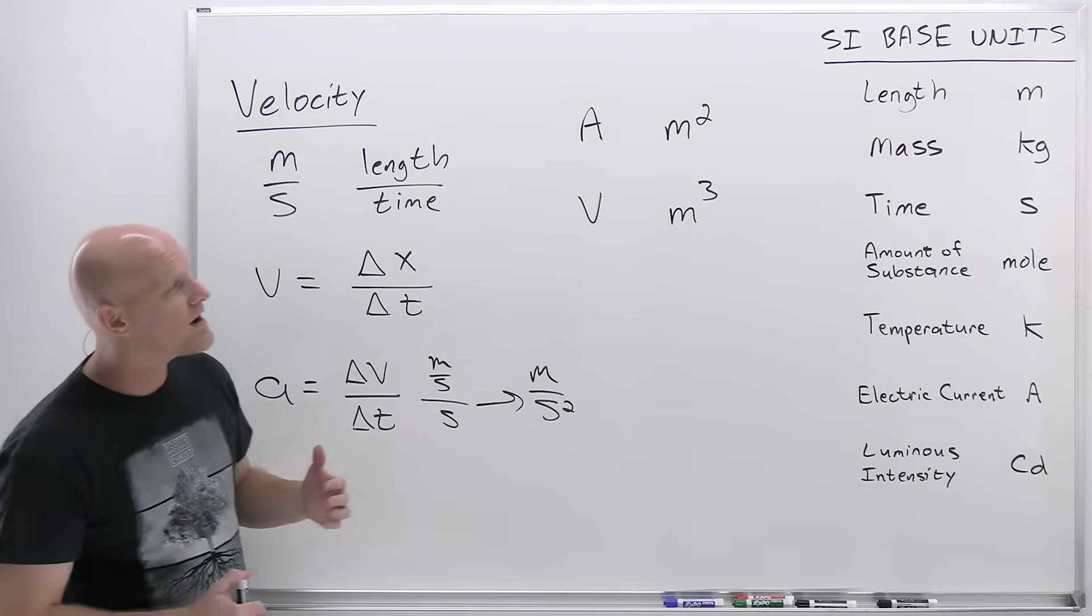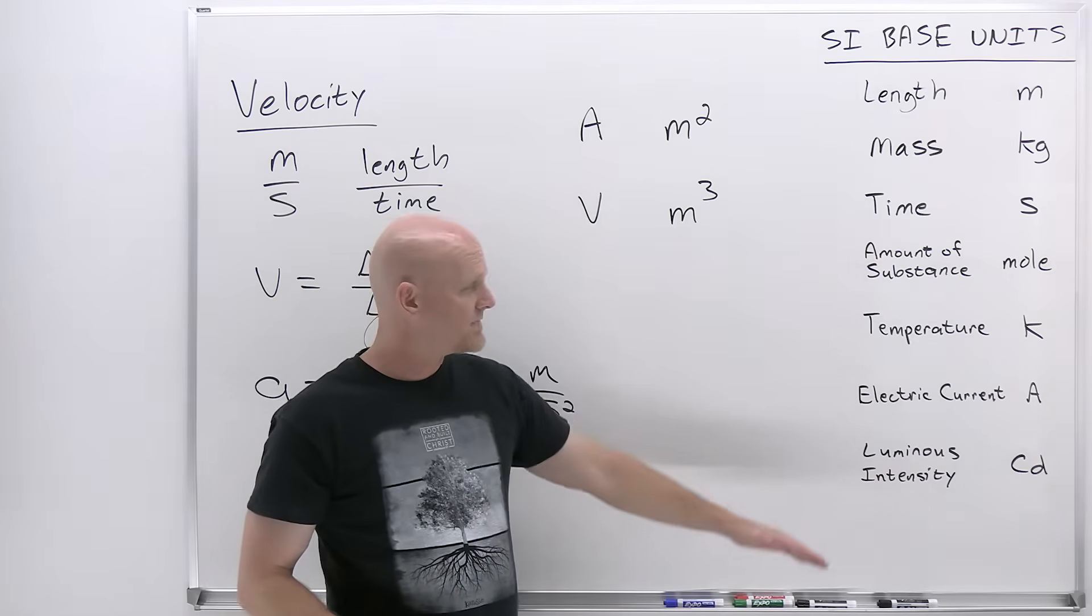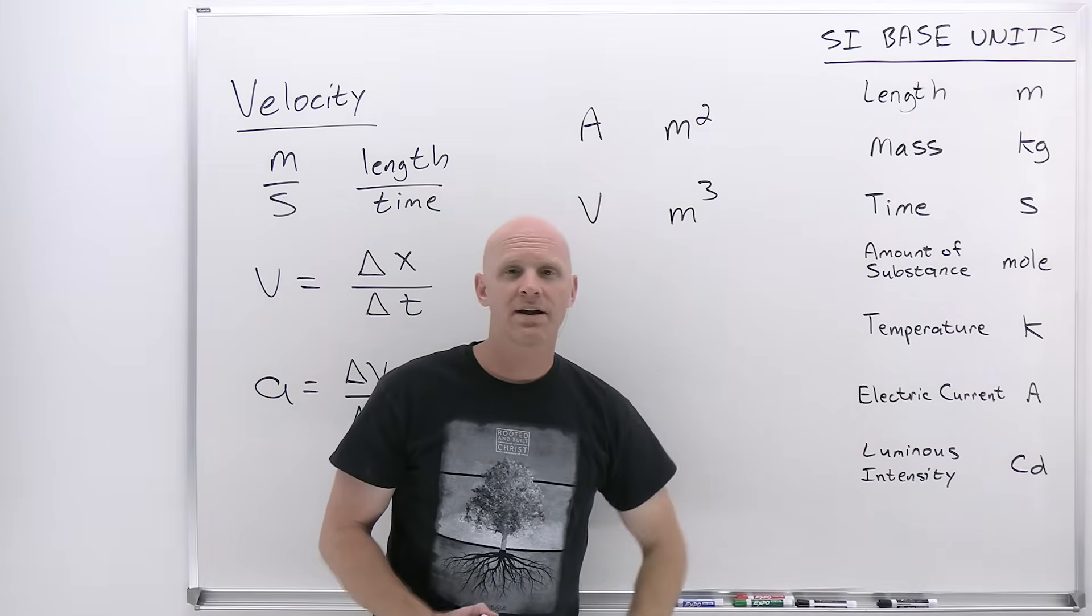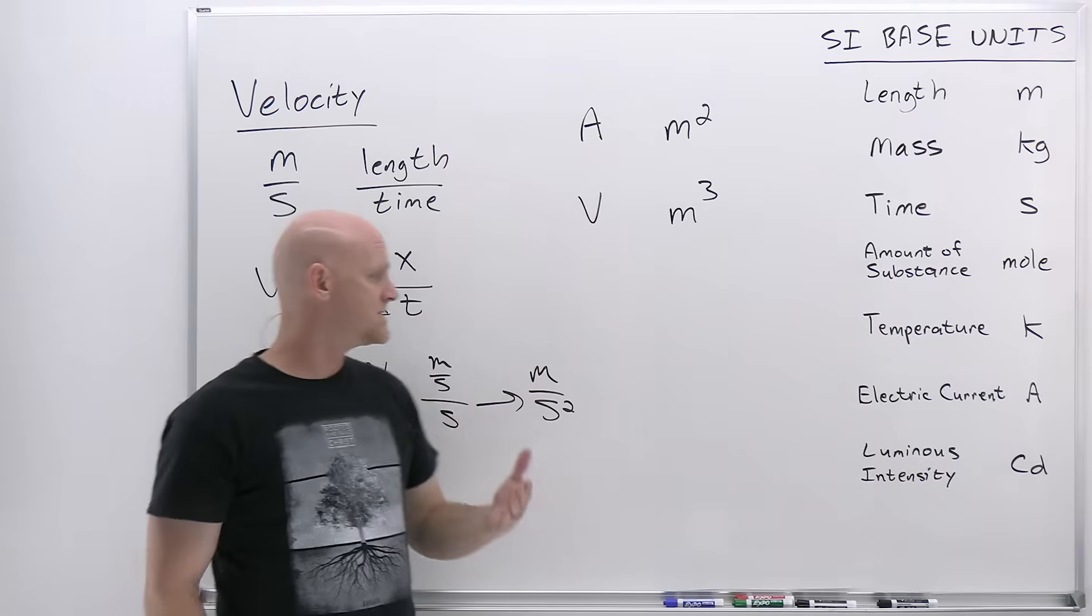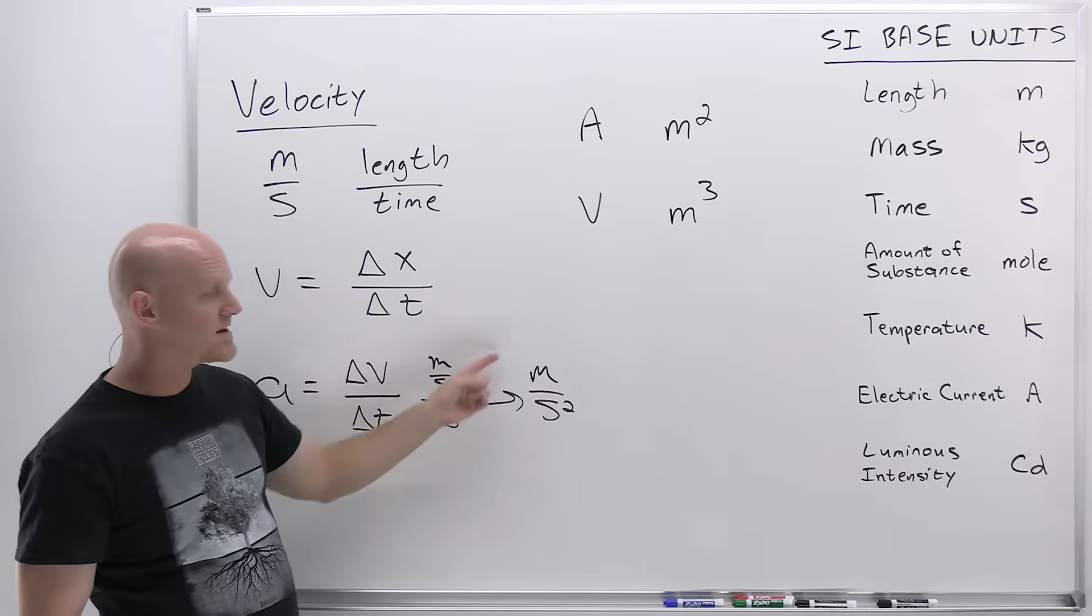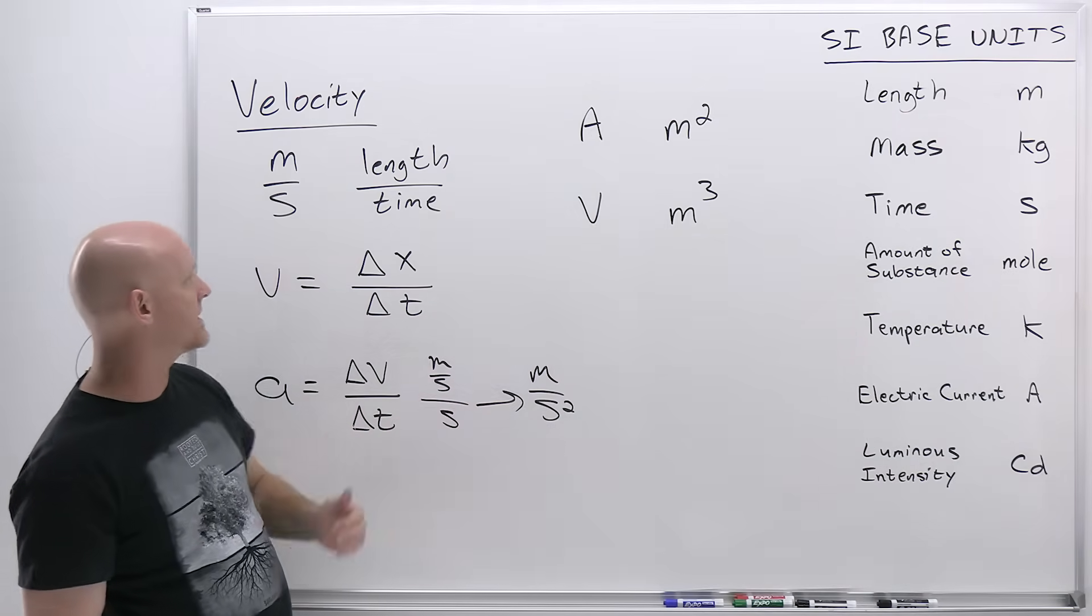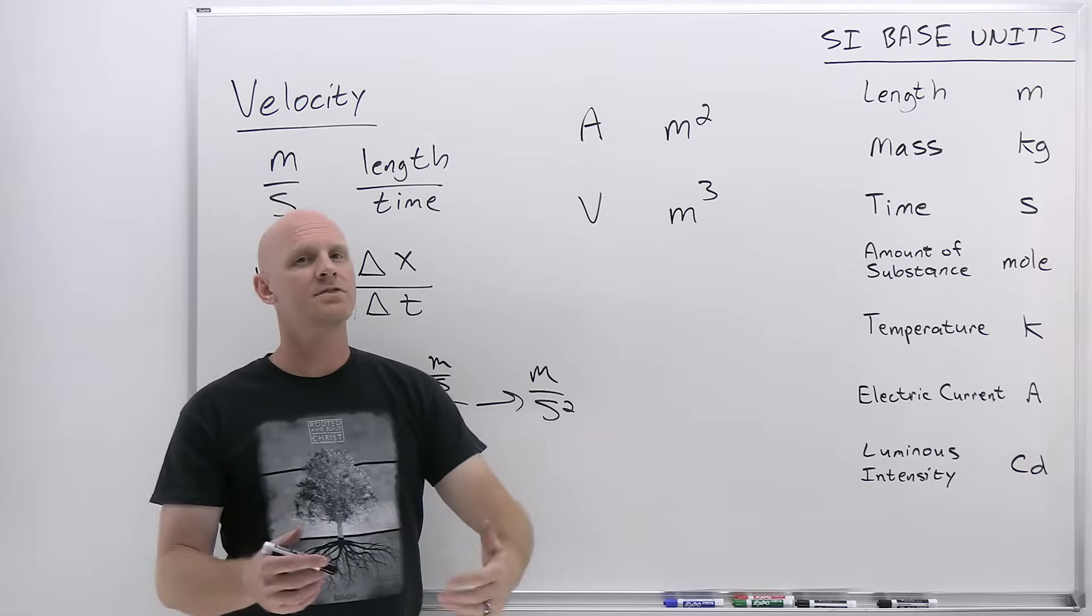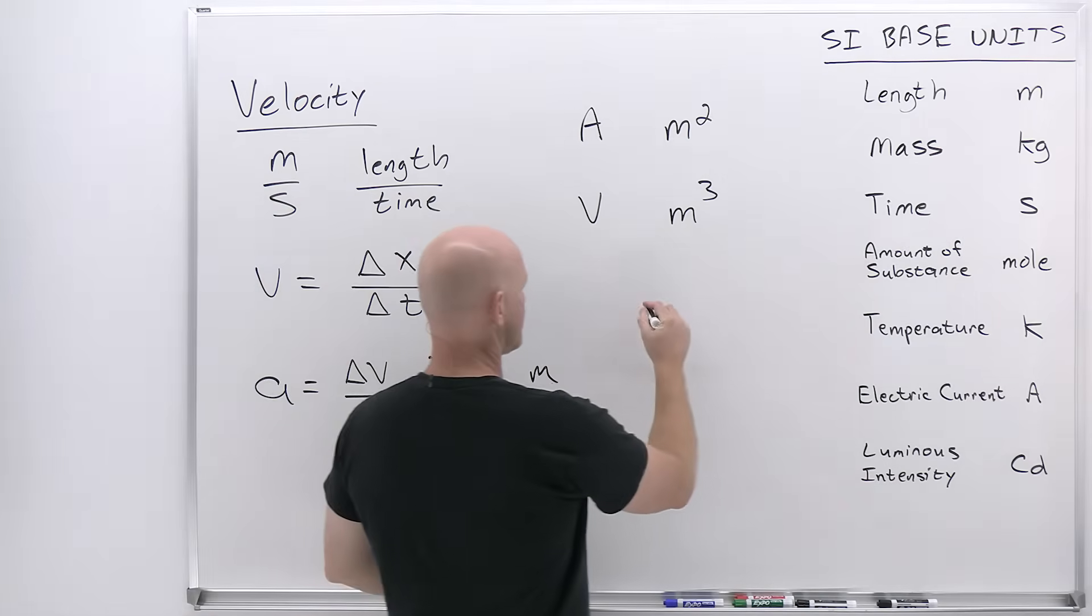One more thing I want to talk about here, and it deals with some of those derived units again. We've got these seven base units. And we'll find out with some of those derived units, instead of just expressing them as some combination of the base units, like meters per second squared or meters per second, you'll find out that they're going to give it a new name. And it turns out, for something like force, the derived SI unit is the Newton.